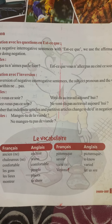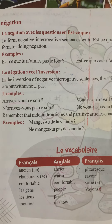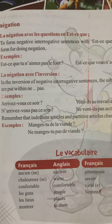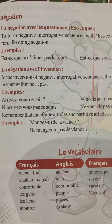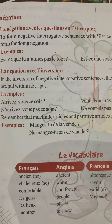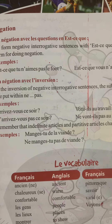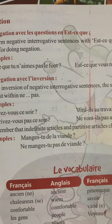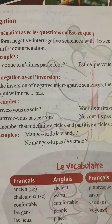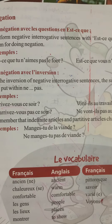Remember that indefinite articles and partitive articles change to 'de' or 'd'' apostrophe in negation. Whenever there are indefinite articles — du, de la, de, l'apostrophe, des — they will change to 'de'. Example: 'Manges-tu de la viande?' — 'Are you eating meat?' In negation: 'Ne manges-tu pas de viande?' — 'de la' changes to 'de'. This change happens only when the sentence is in the negative form. Thank you.